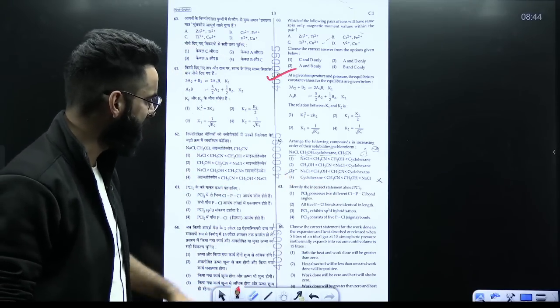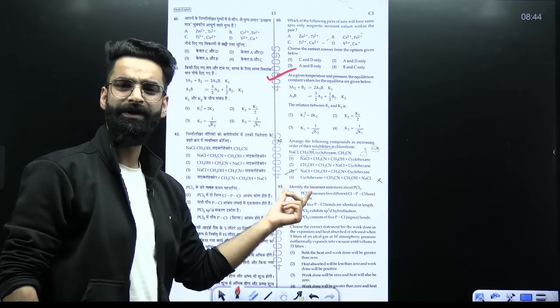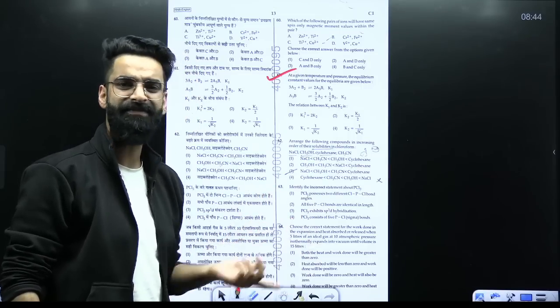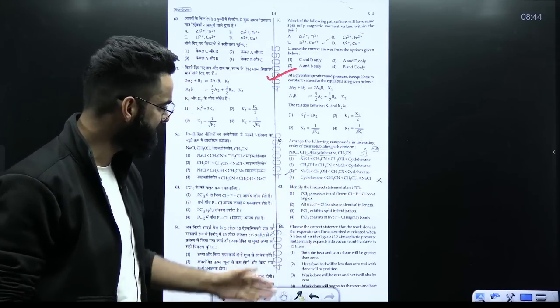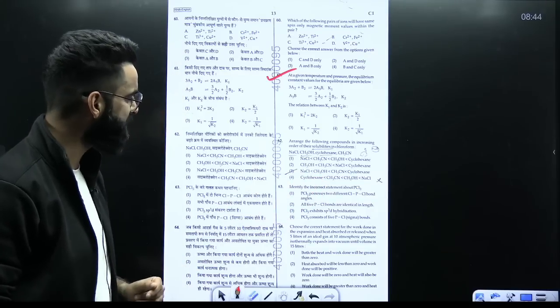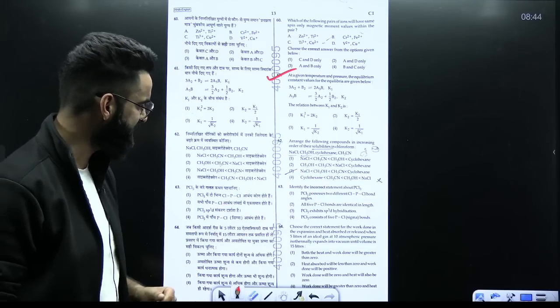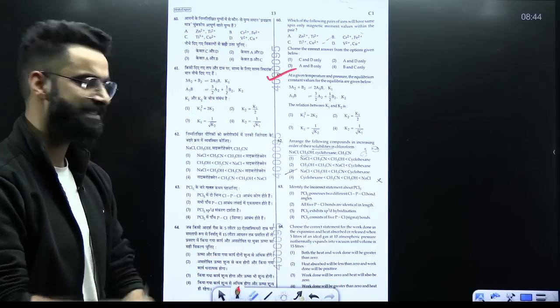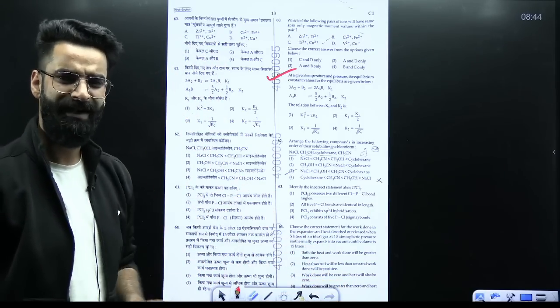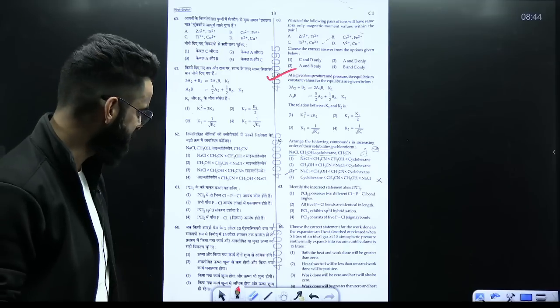Identify the incorrect statement. Molecule is PCl5 and for PCl5 you have to check the incorrect. PCl5 possesses 2 different Cl-P-Cl bond angles. All the 5 P-Cl bonds are identical. PCl5 exhibits SP3 hybridization. PCl5 consists of 5 P-Cl sigma bonds. Again, a simple basic question from your SP3D part which involves your PCl5.